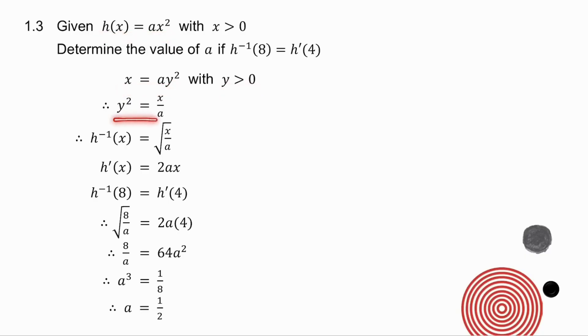So y squared is equal to x over a, and because y is positive, it means when I get what y is equal to, I have the positive square root only. So there's the formula for the inverse. If I take the derivative of h of x, I get the derivative to be 2ax. Now I've been told that the inverse when x is 8 is equal to the derivative when x is 4. So there's the inverse when x is 8, there's the derivative when x is 4, square both sides, and solve for a.